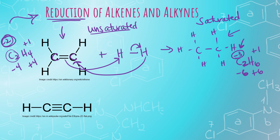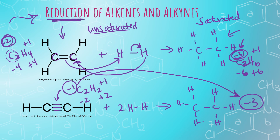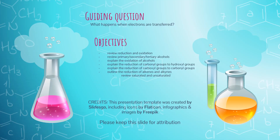Let's do the same thing with an alkyne. If I add lots of hydrogen gas to an alkyne, we can break the triple bond into a double bond and then a single bond, and we end up with ethane. In ethyne (C₂H₂), two hydrogens at +1 each total +2, so two carbons add up to −2, giving each carbon −1. In ethane, each carbon is −3. We went from −1 down to −3 — that's a big reduction.